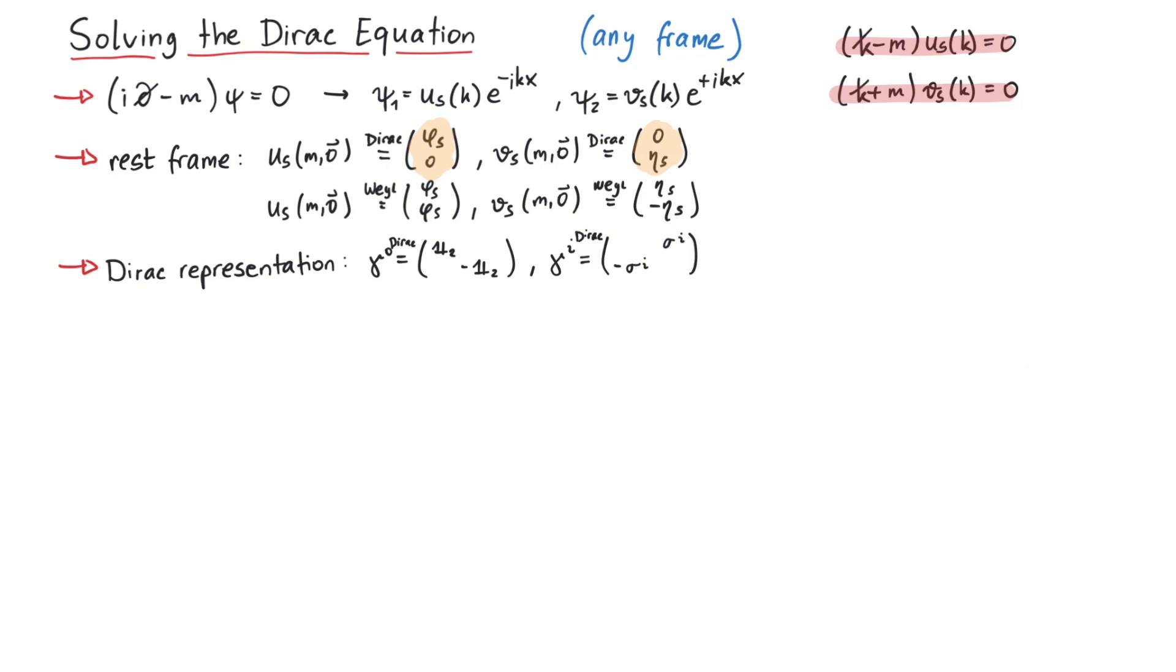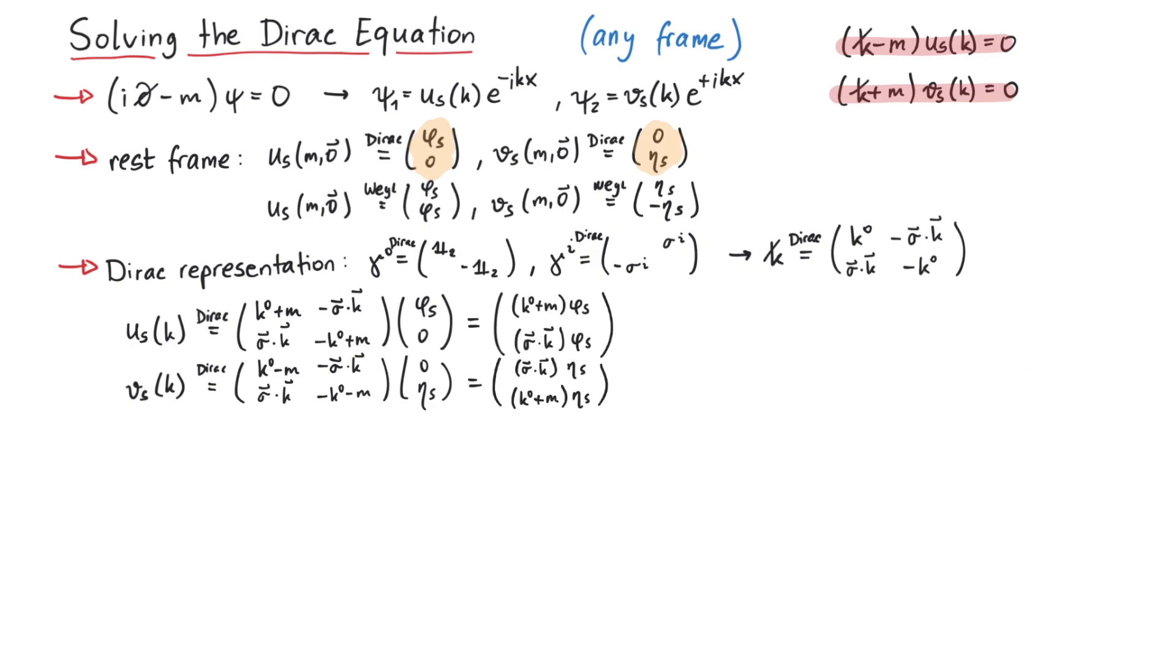First of all, we have to write down k slash. Next we have to add or subtract the mass and multiply it onto the rest frame solutions. The result looks like this, and keep in mind, those solutions are not normalized. If we look at the limit of small velocities, then these solutions go over to the rest frame solutions.